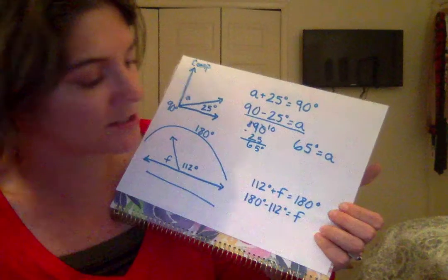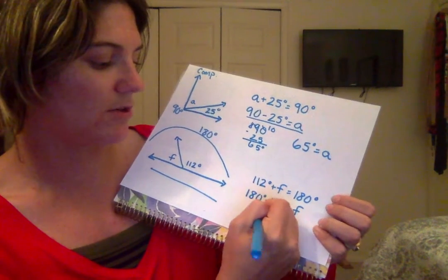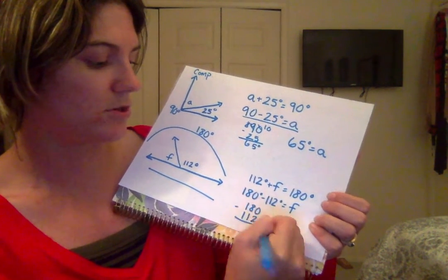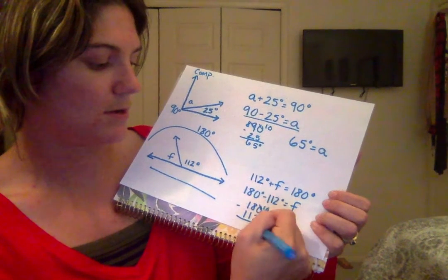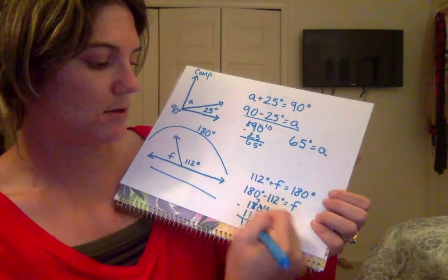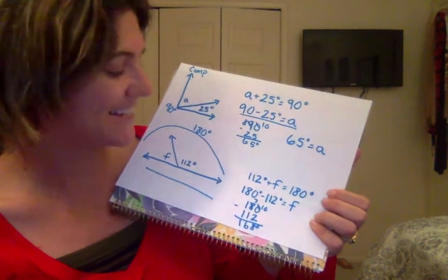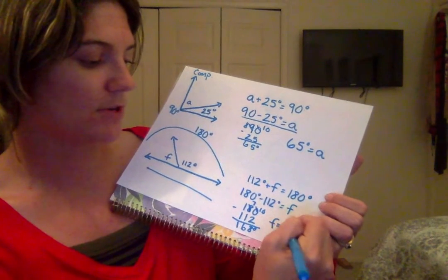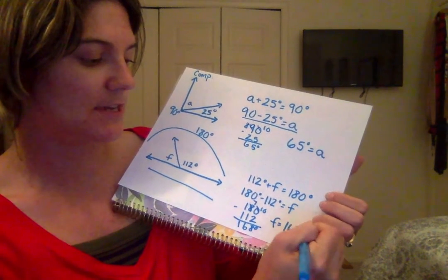Whichever makes most sense to you. We'll go ahead and do our math. 180 minus 112. 168 is our answer. So angle F equals 168.